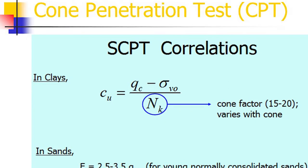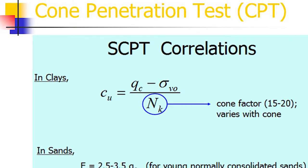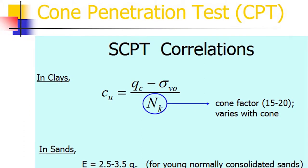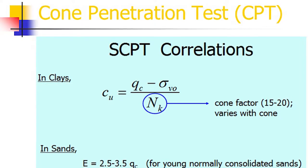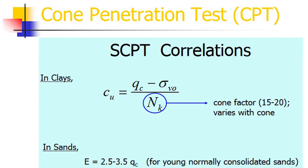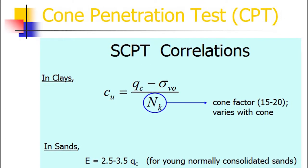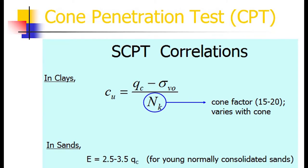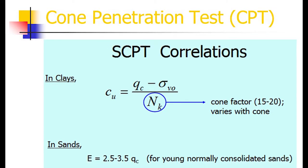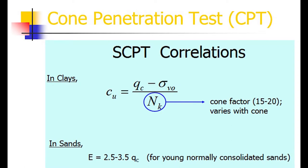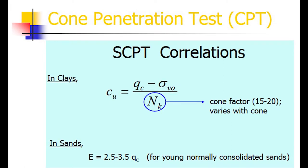CPT correlations: the undrained shear strength Cu = (QC − σv0) / NK, where NK is the cone factor ranging from 15 to 20, varying with the cone. In sands, the elastic modulus E = 2.5 to 3.5 × QC for normally consolidated sand.